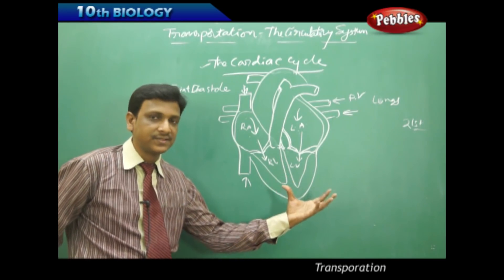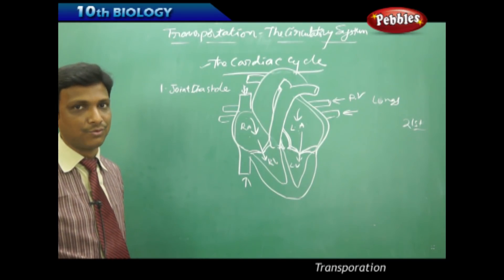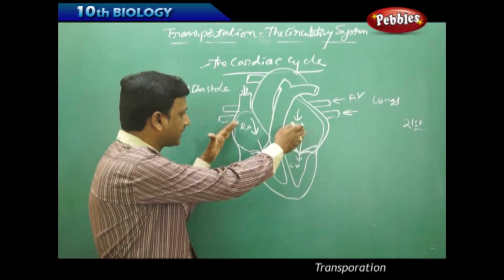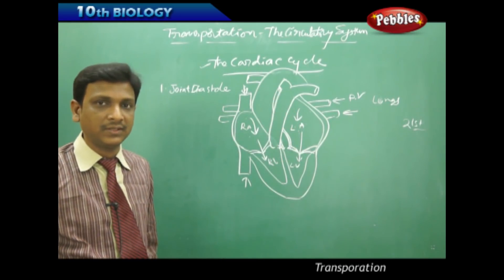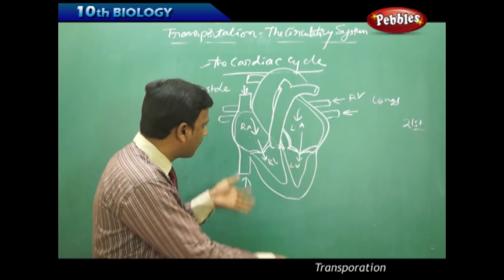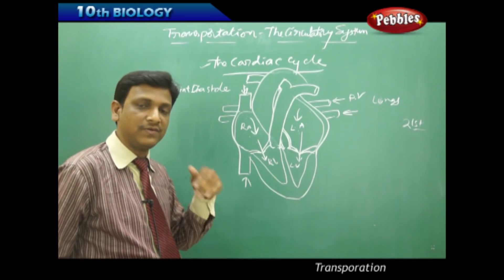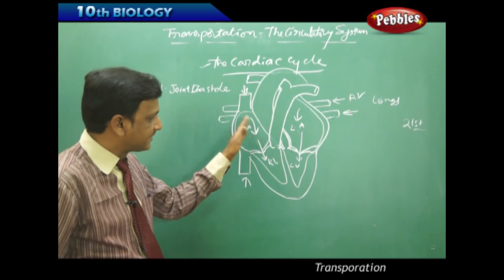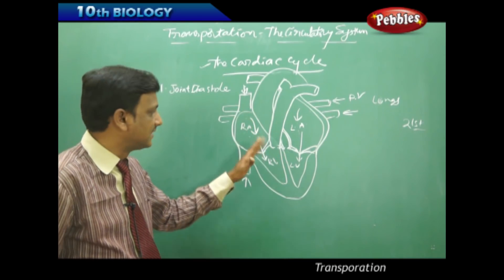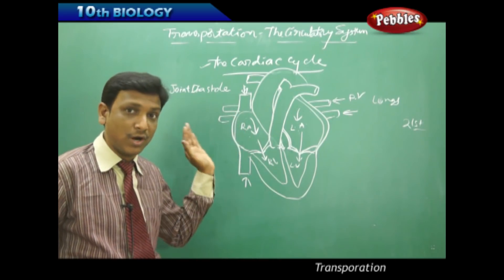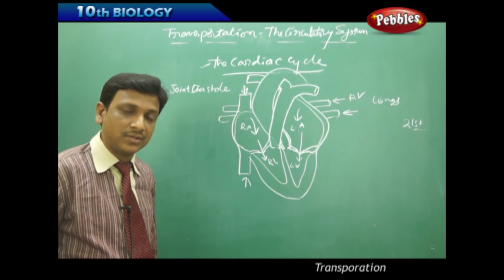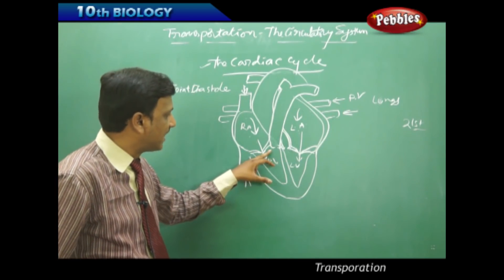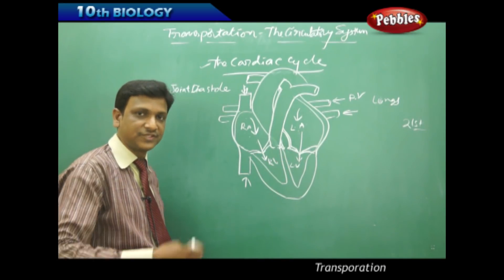Now the ventricles start contracting — ventricular systole. When the auricles contracted, blood came down into the ventricles. When the ventricles contract, the blood does not go back to the atria because the flow of blood is one-way only: from atria to ventricles. The reverse flow is prevented by valves, which prevent the backflow of blood.